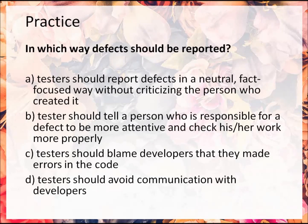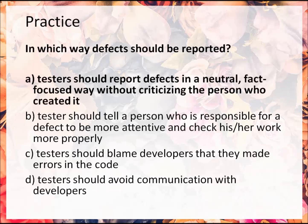Practice. In which way should defects be reported? Testers should report defects in a neutral, fact-focused way without criticizing the person who created it — this is correct. Testers should tell the person responsible for a defect to be more attentive and check their work more properly — no, that is false. Testers should blame developers for making errors in the code — no, that is false. Testers should avoid communication with developers — that is also false. The correct answer is: testers should report defects in a neutral, fact-focused way without criticizing the person who created it.